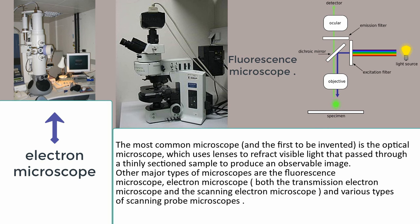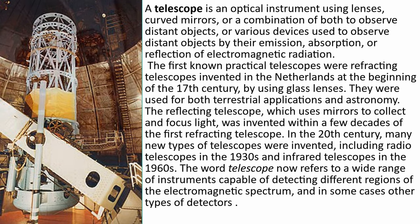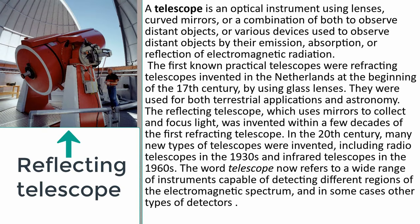A telescope is an optical instrument using lenses, curved mirrors, or a combination of both to observe distant objects, or various devices used to observe distant objects by their emission, absorption, or reflection of electromagnetic radiation. The first known practical telescopes were refracting telescopes invented in the Netherlands at the beginning of the 17th century by using glass lenses. They were used for both terrestrial applications and astronomy. The reflecting telescope, which uses mirrors to collect and focus light, was invented within a few decades of the first refracting telescope. In the 20th century, many new types of telescopes were invented, including radio telescopes in the 1930s and infrared telescopes in the 1960s. The word telescope now refers to a wide range of instruments capable of detecting different regions of the electromagnetic spectrum, and in some cases other types of detectors.